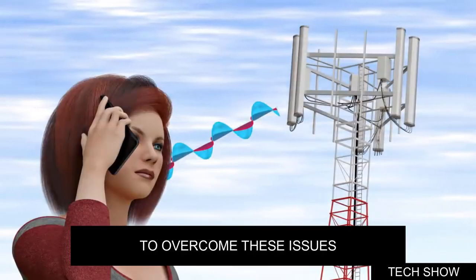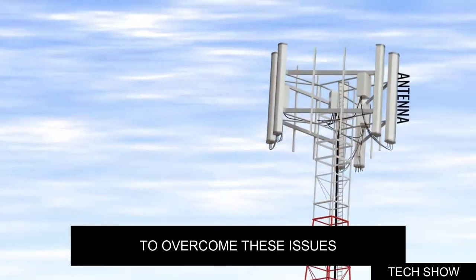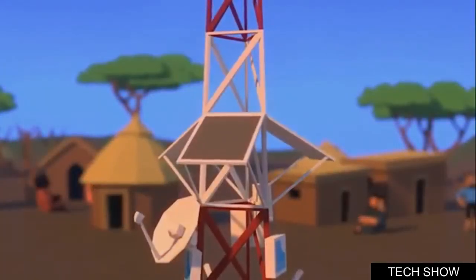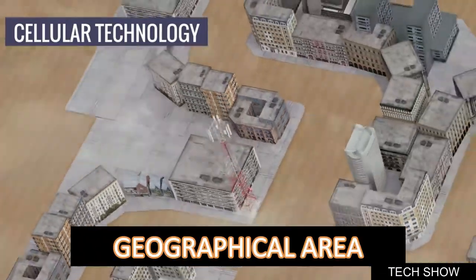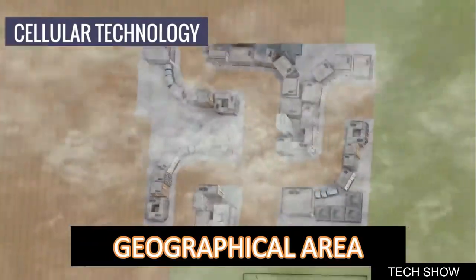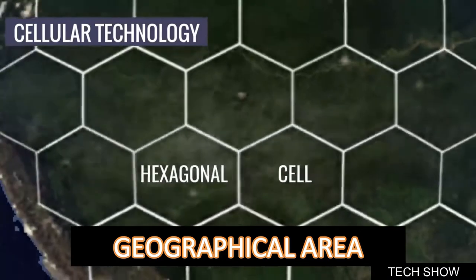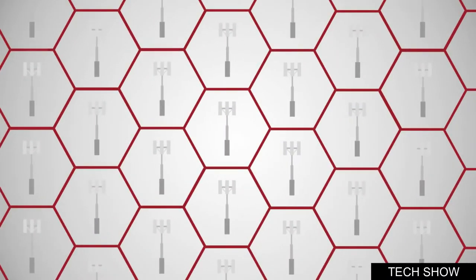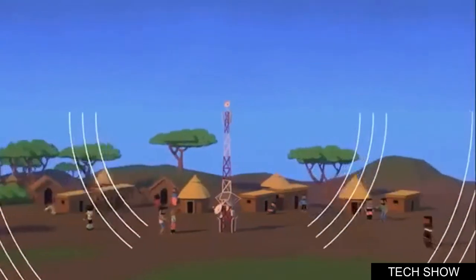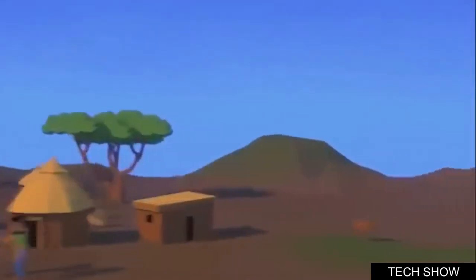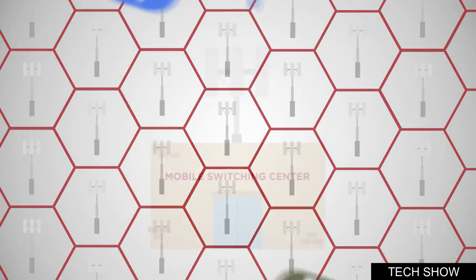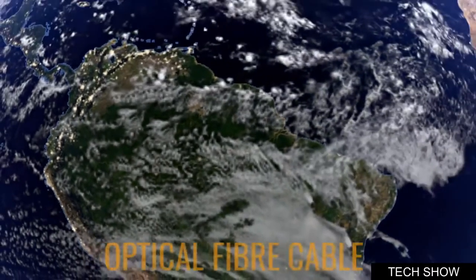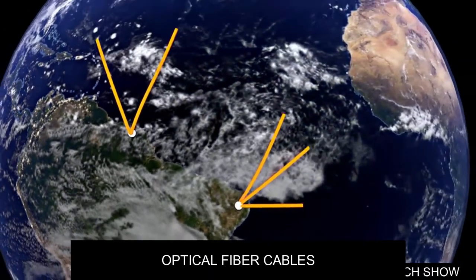To overcome these issues, cell towers were introduced through the concept of cellular technology. In this system, a geographical area is divided into hexagonal cells. Each cell has a tower and a defined frequency slot. Generally, these cell towers are connected through wires — more specifically, optical fiber cables.